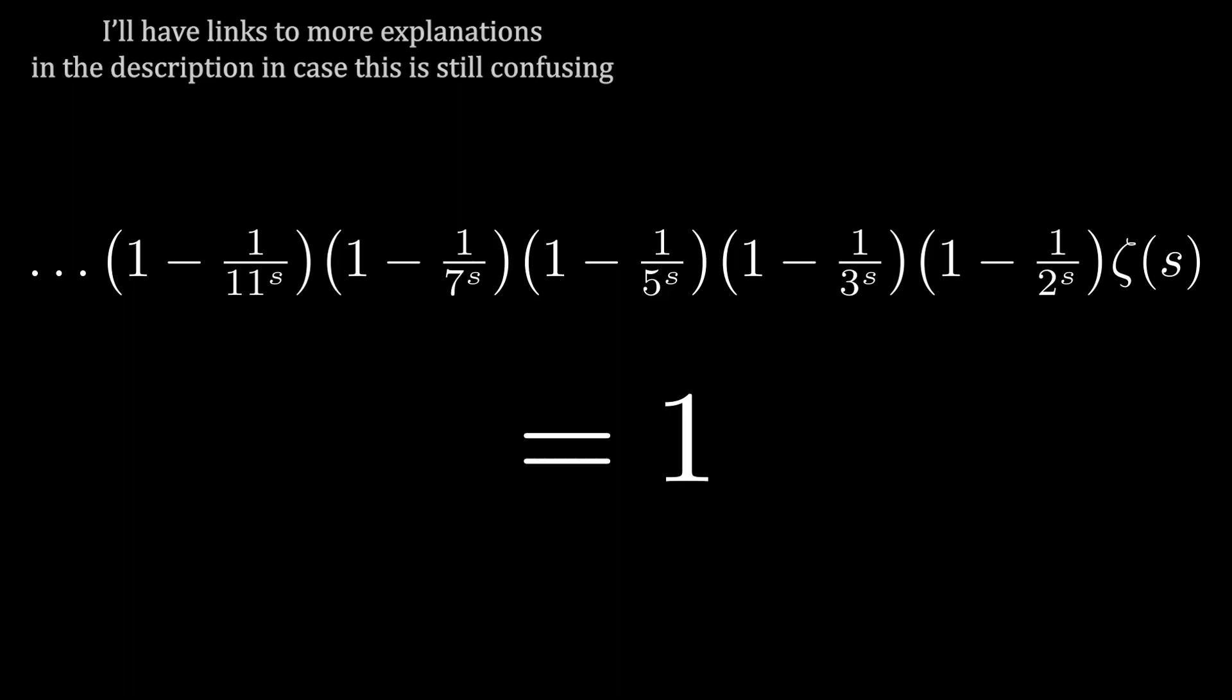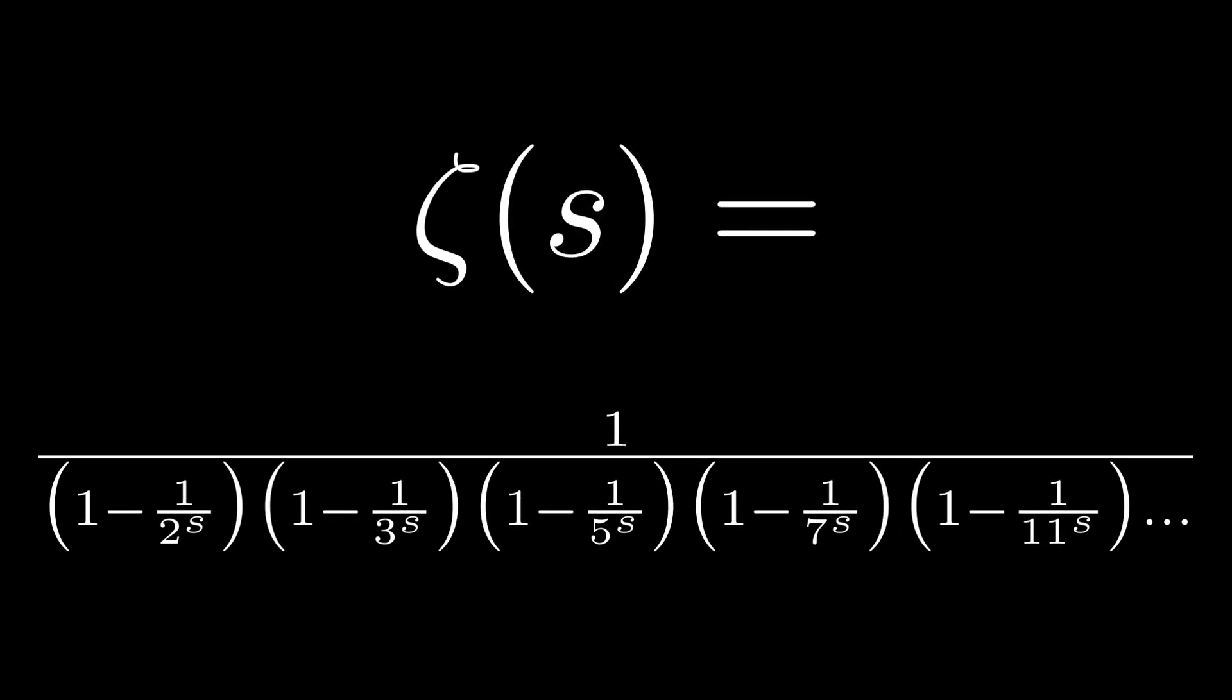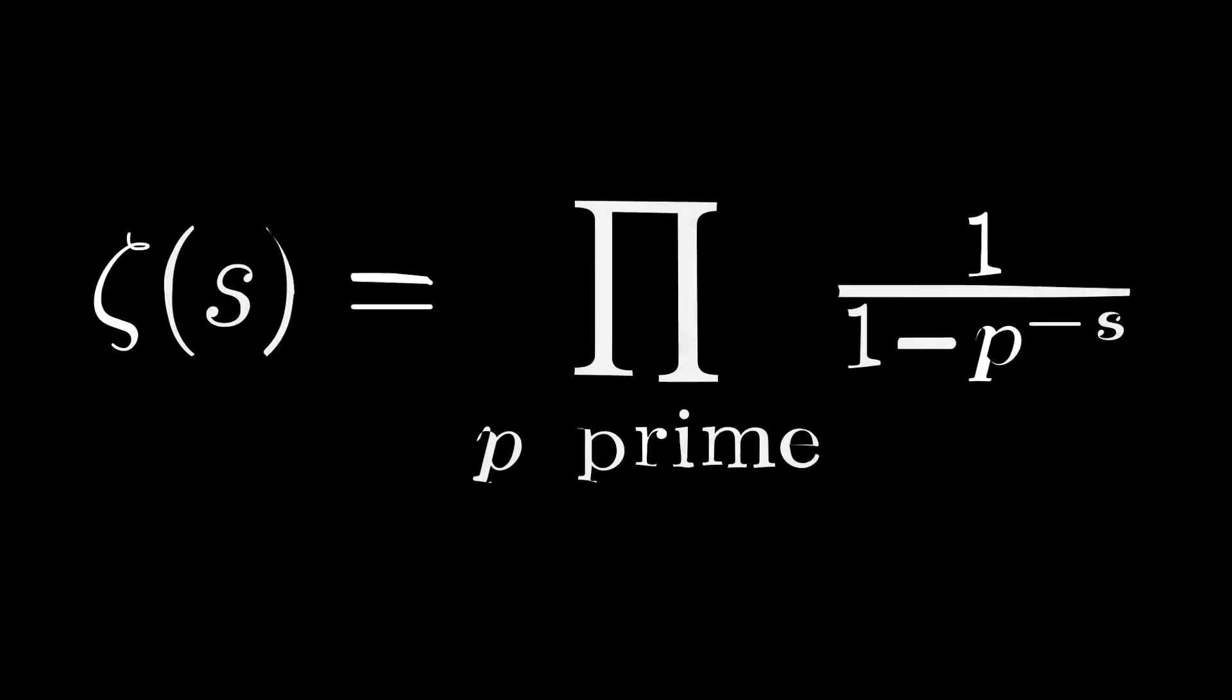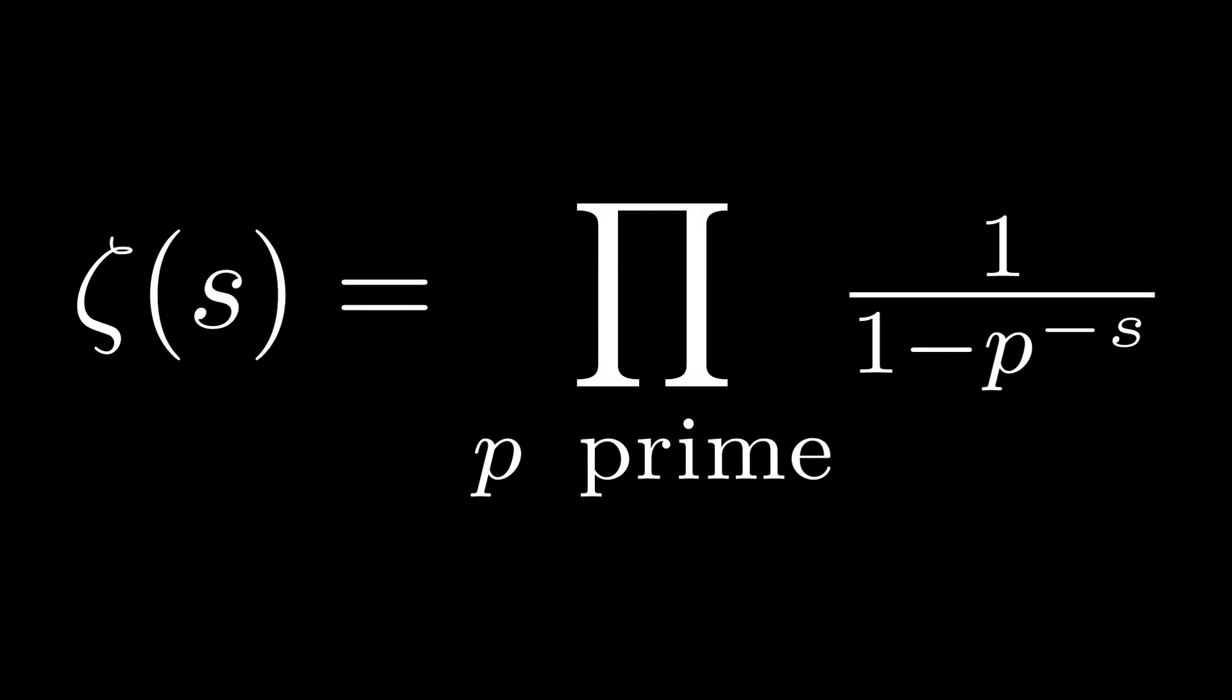Notice now that we can solve for ζ of s by dividing through by all the other factors on the left-hand side. We can now see that the zeta function is equal to 1 over this infinite product containing all prime numbers. We can write this more compactly with product notation as 1 over 1 minus p to the minus s, where p runs over all the prime numbers.